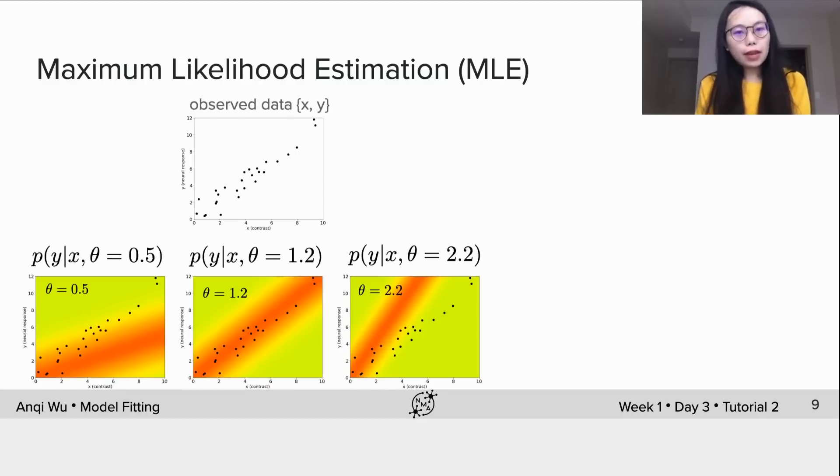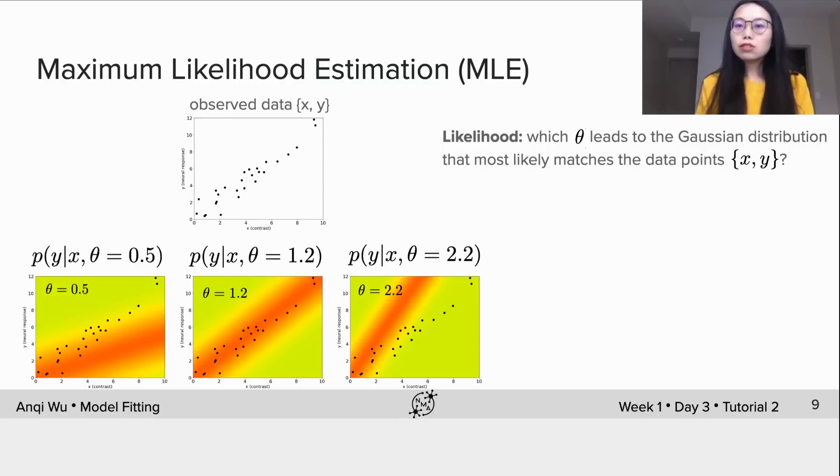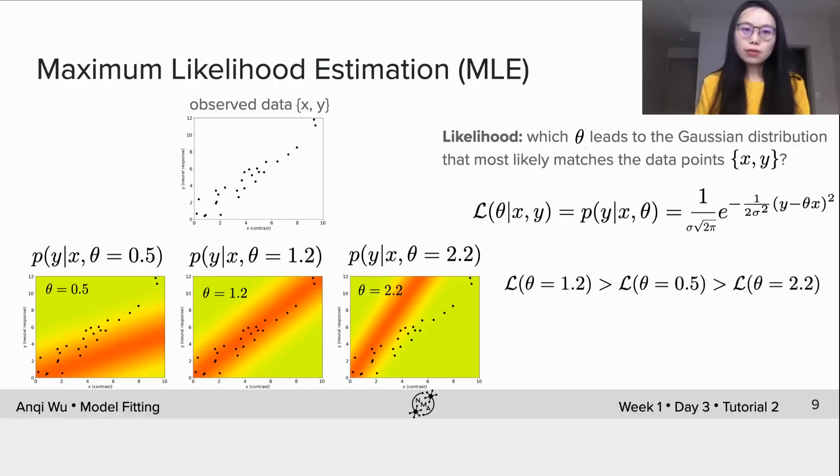So, to find the best theta, we can now introduce the term likelihood. It's a function of parameter theta and used to determine which theta leads to the Gaussian distribution that most likely matches the data points (x, y). And it's usually defined to be the probability density distribution p. And for the three theta values, we could calculate the likelihoods and arrive at the results that the likelihood of theta 1.2 is larger than the likelihood of theta 0.5 and the likelihood of theta equals 2.2.